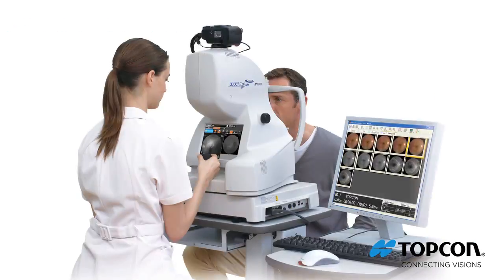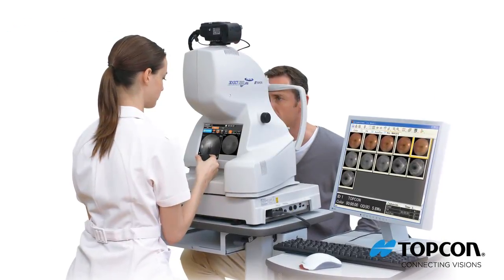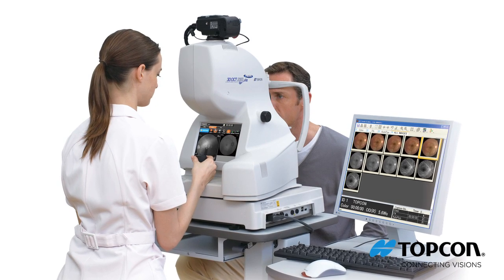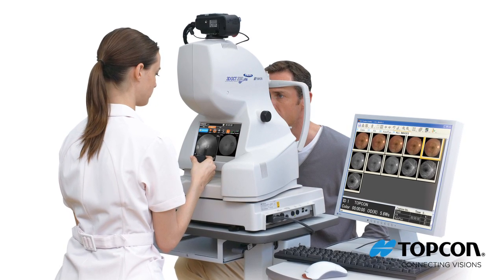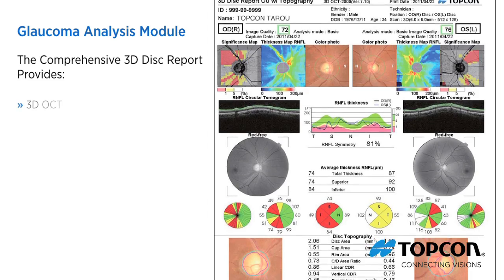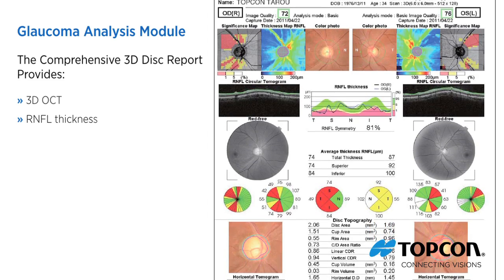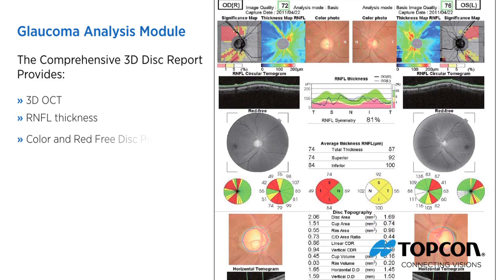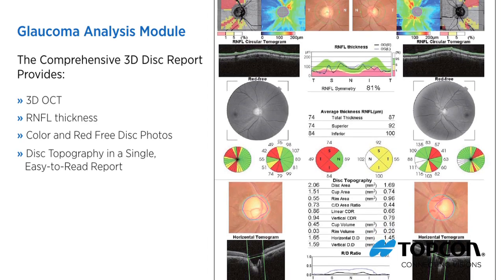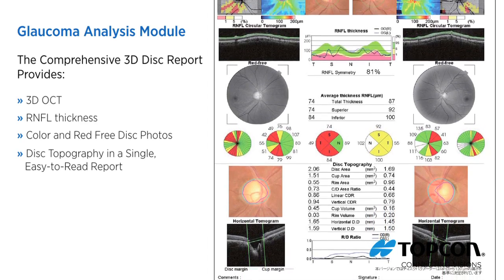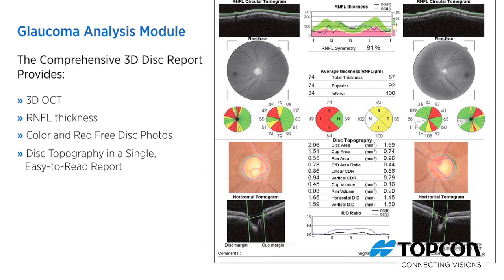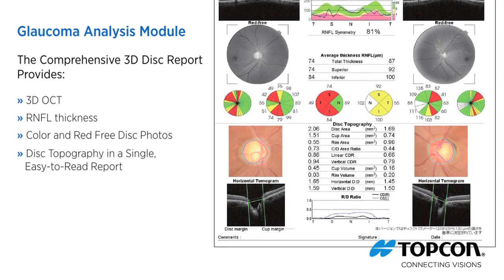The TopCon 3D OCT 2000 has several modules to assist you in managing your glaucoma patients or those you suspect of having glaucoma. The comprehensive 3D disc report provides 3D OCT, RNFL thickness, color and red-free disc photos, and disc topography in a single easy-to-read report. The report also compares your patient's RNFL results with an age-stratified normative database.